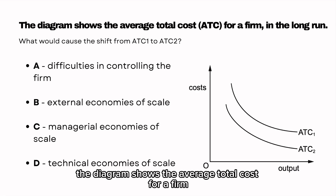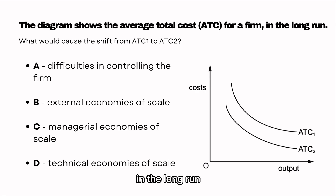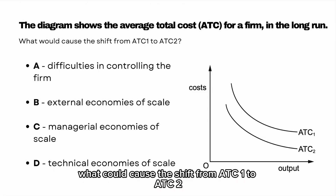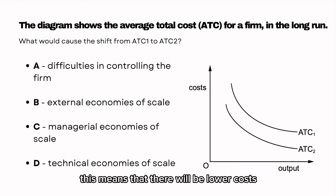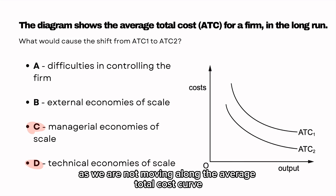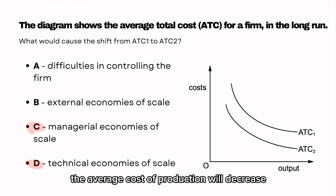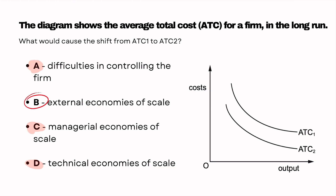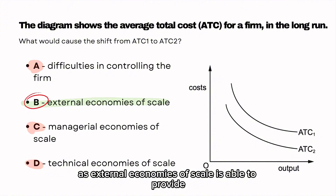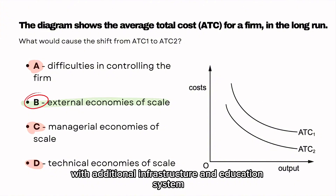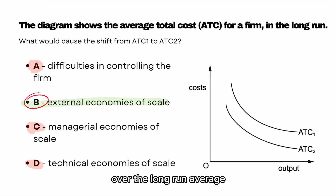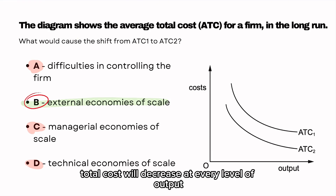The diagram shows the average total cost for a firm in the long run. What could cause the shift from ATC1 to ATC2? This means lower costs at every level of output. It is not C or D as we are not moving along the average total cost curve. It's not A because it doesn't make sense. The answer is B — external economies of scale provide additional infrastructure and an education system over the long run, so average total cost decreases at every level of output.